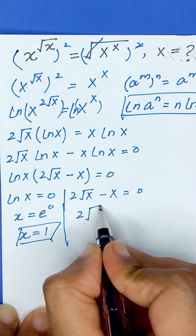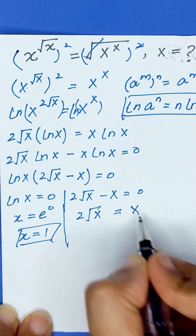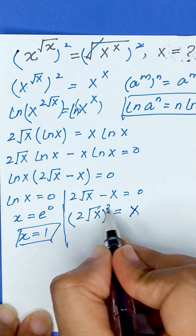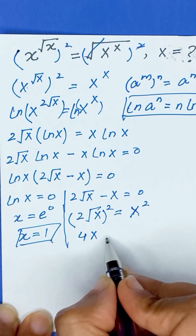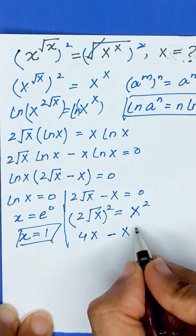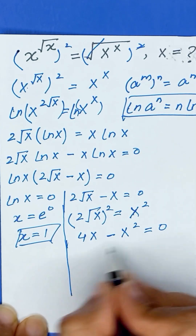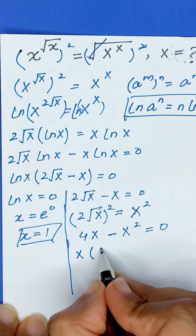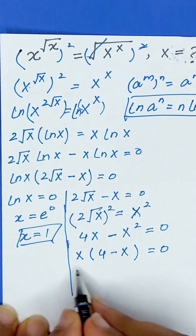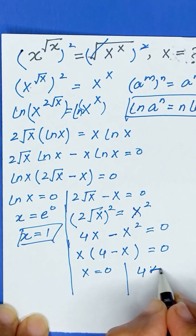For the second case, we can write 2 times square root of x is equal to x. Applying square on both sides gives 4x equals x squared. Taking x squared to the left hand side: 4x minus x squared equals 0. Factoring out x gives x times (4 minus x) is equal to 0. So we again have two cases: x equals 0 and 4 minus x equals 0.